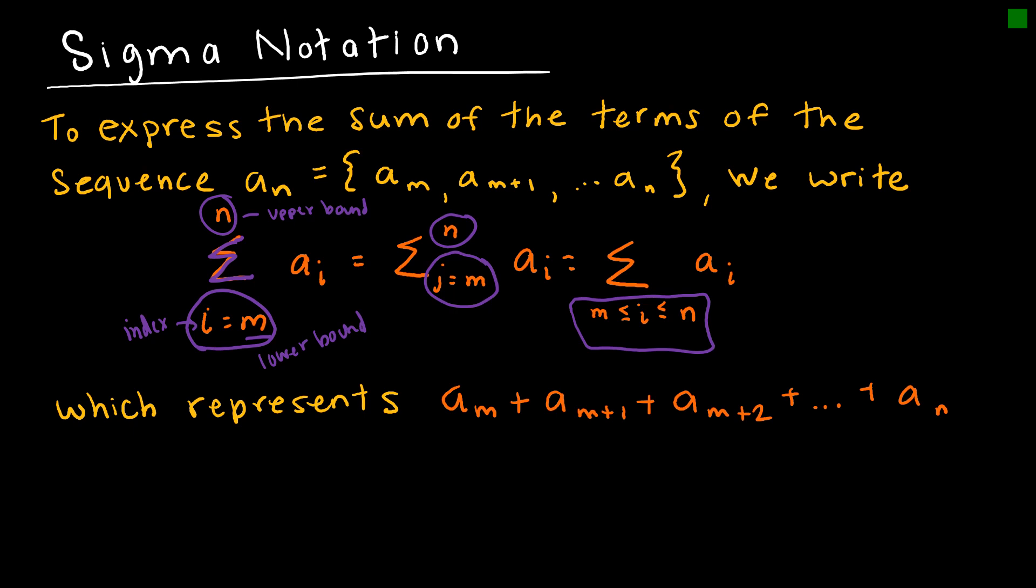And again all that means, that sigma notation tells us that we're going to start at M so I'm going to take A sub M, whatever that number is, so that would actually be a number. I would start here and I would keep increasing by 1 until I got to N. So A sub M, I would increase that by 1, which would be A sub M plus 1. I would keep increasing it, A sub M plus 2, etc.